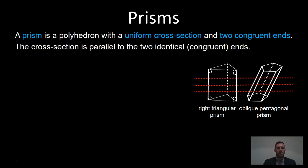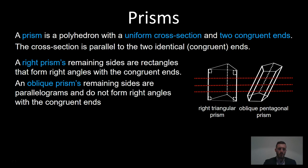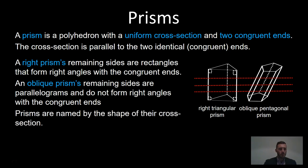If we cut those prisms into many pieces along that line, all the pieces would be the same. A right prism has its remaining sides as rectangles that form right angles with the congruent ends. An oblique prism has its remaining sides as parallelograms; they don't form right angles with the congruent ends. You can see that easily with these two examples here. Prisms are named by the shape of their cross sections.